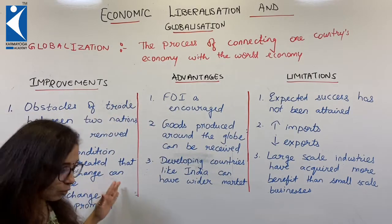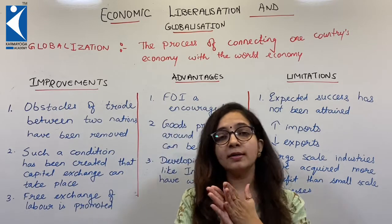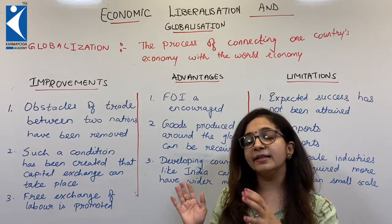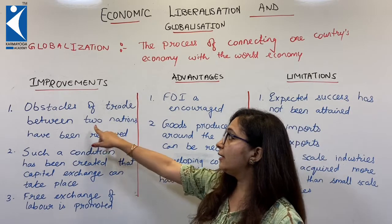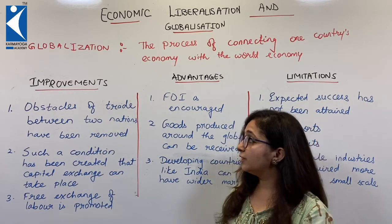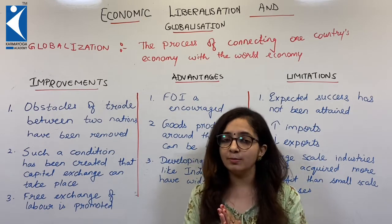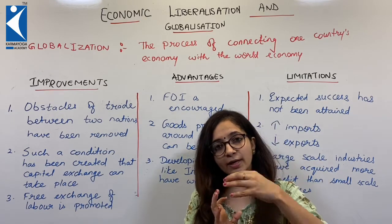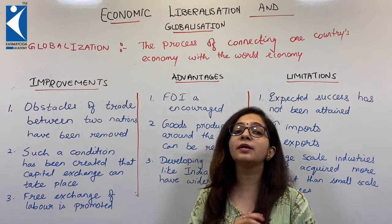There are some improvements done — what it was earlier and what it is now. There are some improvements made after the 1991 globalization policy. The first is that obstacles of trade between the two nations have been removed. No country will deny any product of another country from entering.